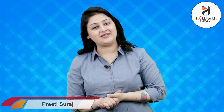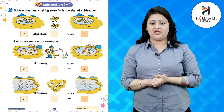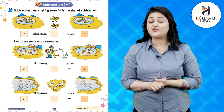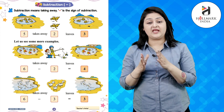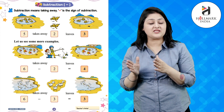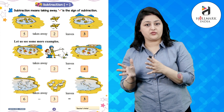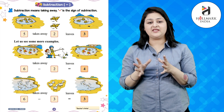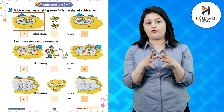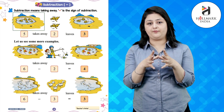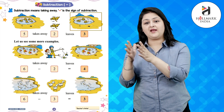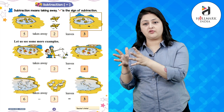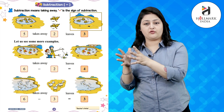Hello kids, I hope you are fit and fine. Today we will be reading the chapter subtraction. Subtraction means taking away, and this is the sign of subtraction. Let's see the first picture: there are five frogs in the pond. In the second picture there are two frogs, and in the third picture there are three frogs.